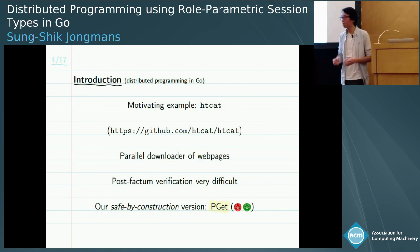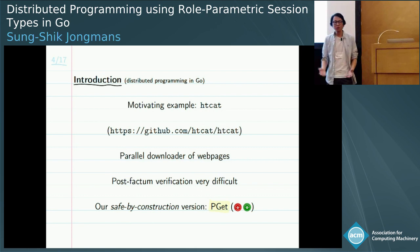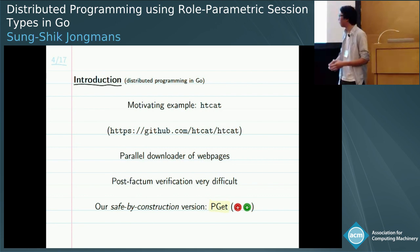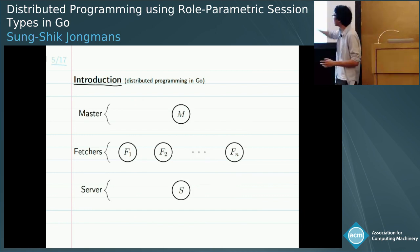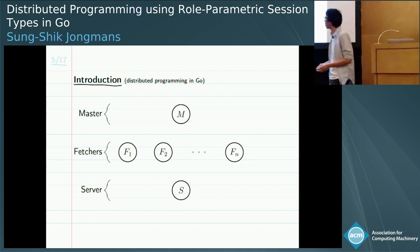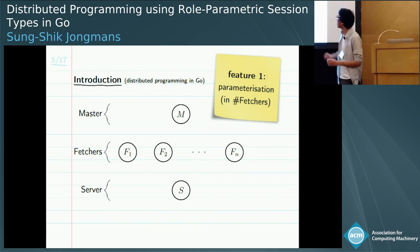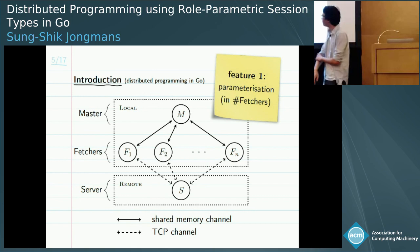In previous work we tried to apply post-factum verification techniques to establish the safety of HTCAT, but this turned out to be very difficult — we didn't really manage to do that. So the idea for this work was to use a correctness-by-construction approach to build our own version of HTCAT that is safe by construction, which we call PGET. The program has a master as the entry point, a bunch of fetchers responsible for the actual download work, and a remote server. A key feature is that the number of fetchers is determined dynamically at runtime, so you need to support runtime parameterization.